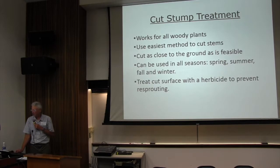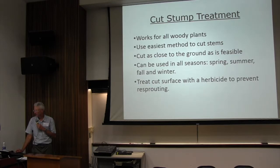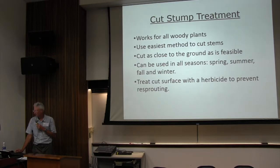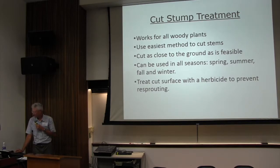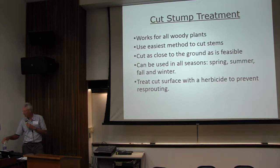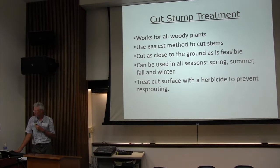The cut stump treatment is what I use primarily. It basically works for all woody plants — anything that has a woody stem that you can cut, from multi-flora rose to any kind of tree or shrub. You want to use the easiest method to cut the stem. You also want to cut as close to the ground as possible, because if you cut high on the stem, even though you cut the top away, there's potential for the base to re-sprout. The closer to the ground you cut, the less likely the plant will re-sprout.